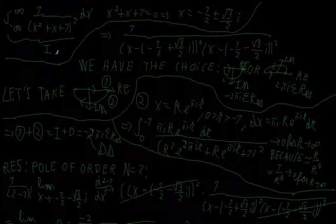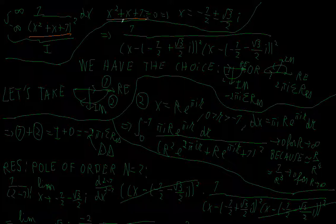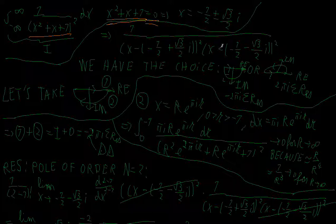I want to evaluate the integral from minus to positive infinity of 1 over (x² + x + 1)² using the residue theorem. As usual, I will try to find the poles first. Setting the denominator equal to 0, I get that x equals minus one half plus or minus square root of 3 over 2 times i. So those are my poles.